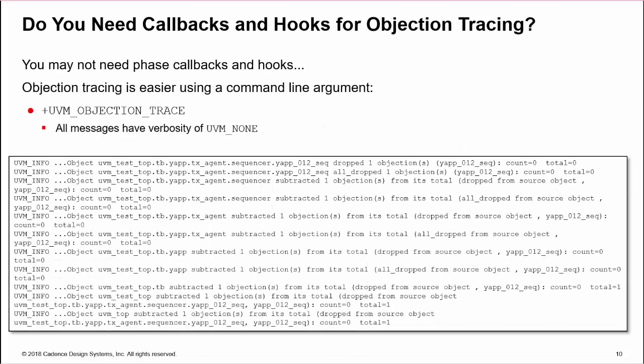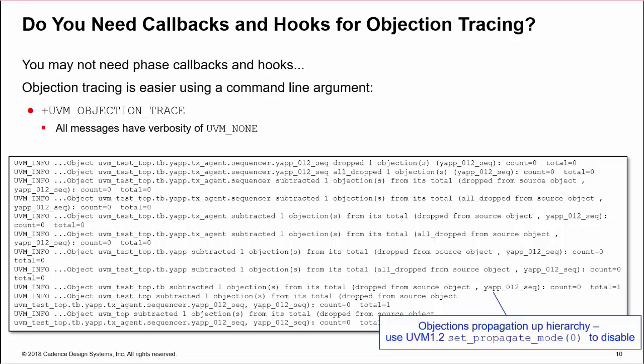There is another easy command line option to debug objection handling, +uvm_objection_trace. This reports messages with a verbosity of UVM_NONE every time an objection is raised or dropped, and includes the description argument of the objection method. Note that objections are propagated up the UVM hierarchy to uvm_top, so a dropped objection in a sequence will generate a report from the sequence, sequencer, agent, UVC, testbench, test, and uvm_top layers during propagation. The UVM 1.2 set_propagate_mode(0) method can be used to pass objections directly from source to uvm_top, which will avoid reports from intermediate hierarchical levels.